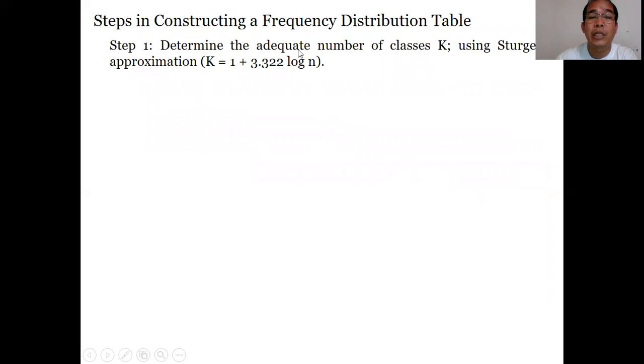For you to determine the adequate number of classes, you have to use this formula, also known as Sturges' approximation. K is equal to 1 plus 3.322 log n. The 1 is constant, 3.322 is constant. Log of n, where n is the variable representing the number of observations or data sets.